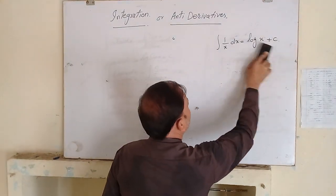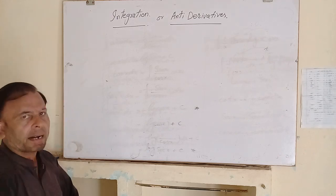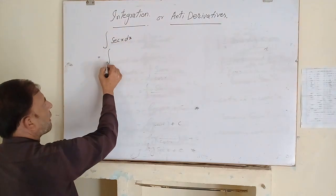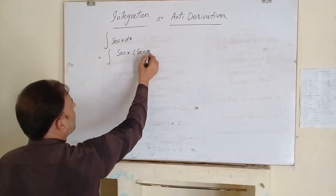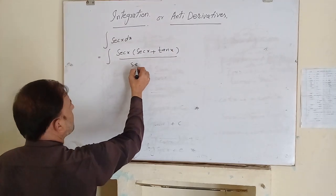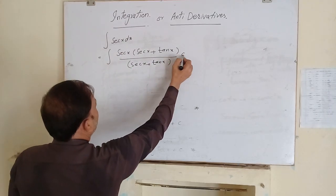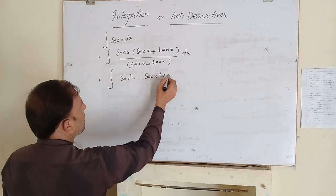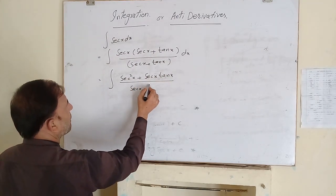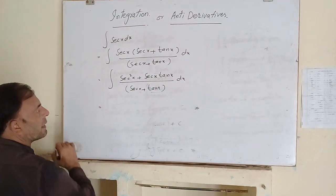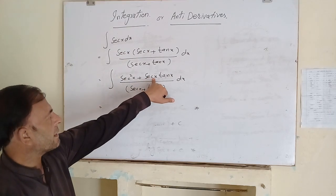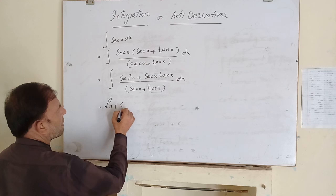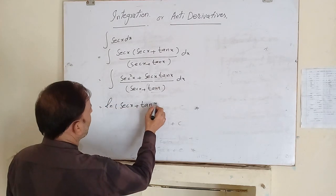We have two remaining trigonometric functions: secant x and cosecant x. To integrate secant x, we multiply and divide the function by (secant x plus tan x). The numerator becomes secant squared x plus secant x tan x, over (secant x plus tan x). The derivative of the denominator (secant x plus tan x) is secant x tan x plus secant squared x, which matches the numerator. So the integration of secant x is equal to log of (secant x plus tan x) plus c.